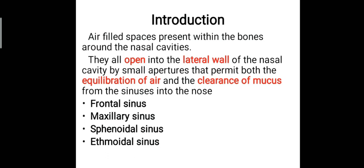The paranasal sinuses are air-filled spaces present within the bones around the nasal cavity which open into the lateral wall of the nasal cavity by small apertures that permit both the equilibration of air — that is the passage of air — and the clearance of mucus from the sinuses into the nose.